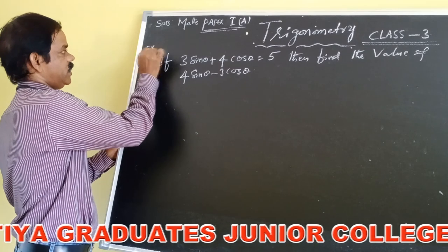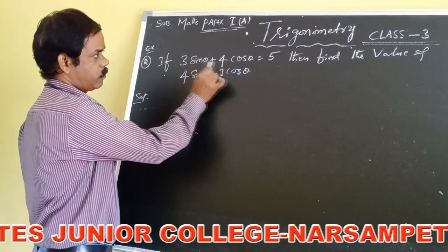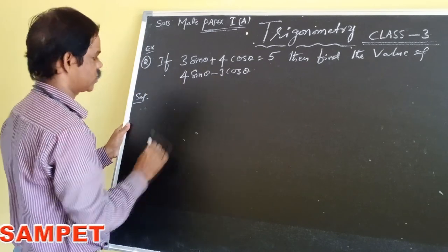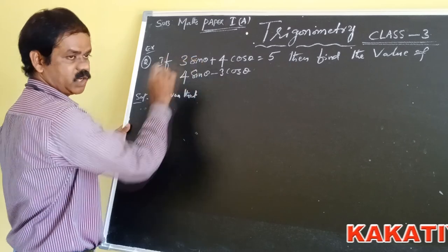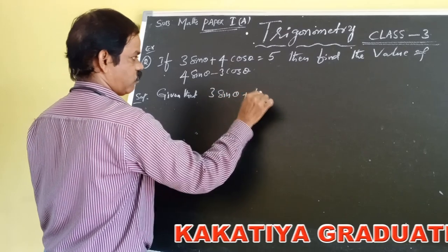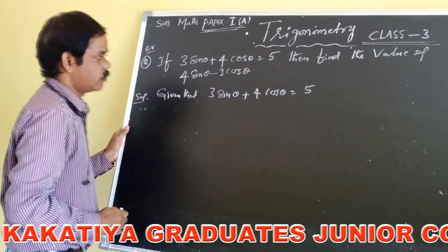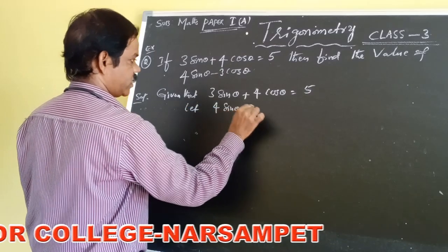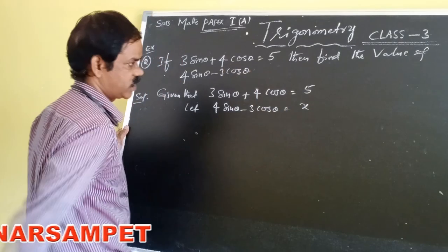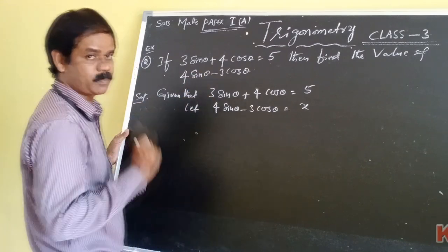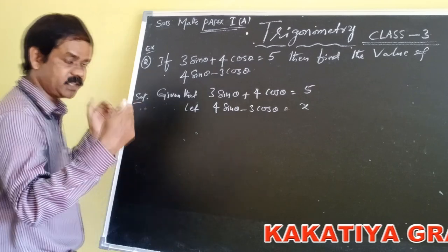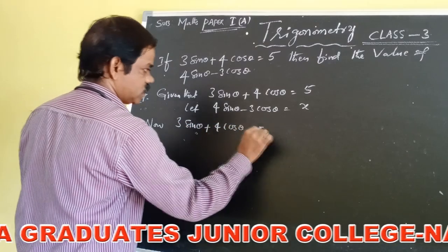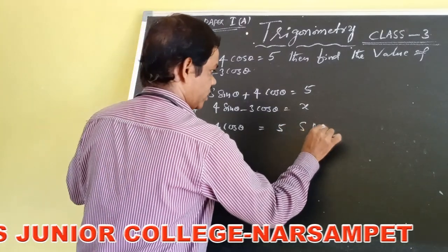Now example number 2: If 3 sin theta plus 4 cos theta is equals to 5, then find the value of 4 sin theta minus 3 cos theta. So first, the given value is 3 sin theta plus 4 cos theta equals 5. We don't know the value of 4 sin theta minus 3 cos theta, so let us consider 4 sin theta minus 3 cos theta equals x. The concept for solving this problem is squaring both equations and adding them.